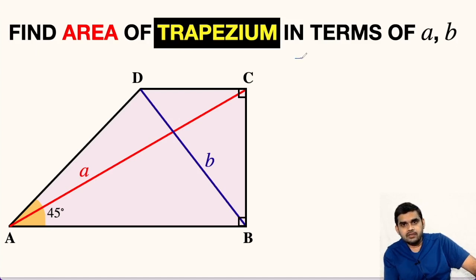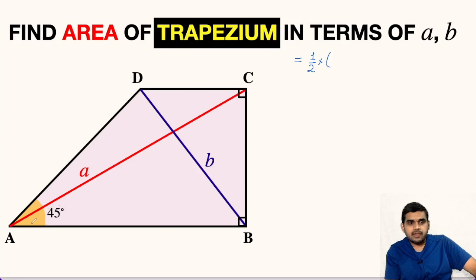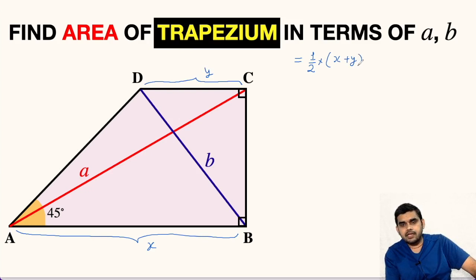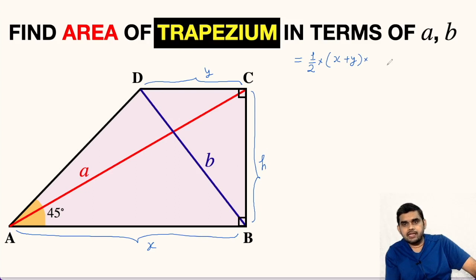We know that the area of any trapezium is equal to half times the sum of the parallel sides. The parallel sides are AB and CD. Let us name AB as X and CD as Y. So the area is half times (X + Y) times the perpendicular distance between them. In our case, BC will be the perpendicular distance — let this be H.